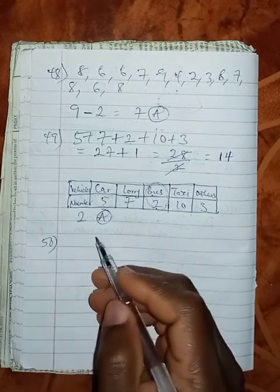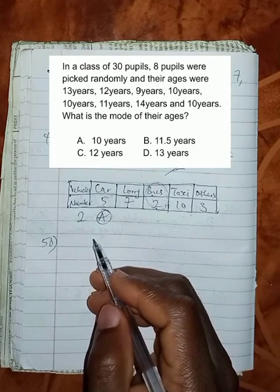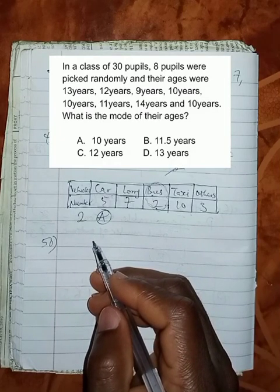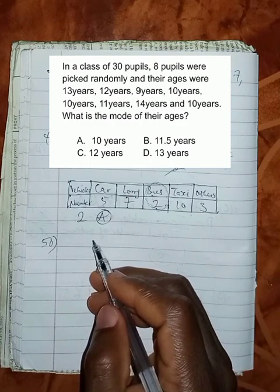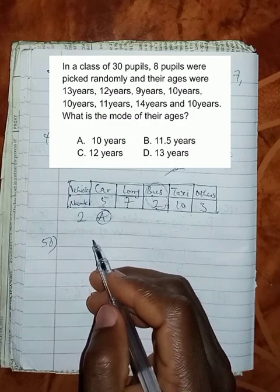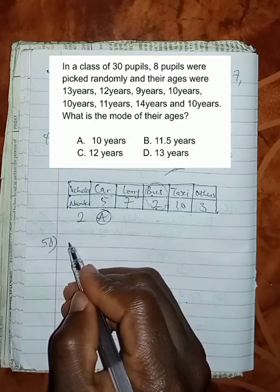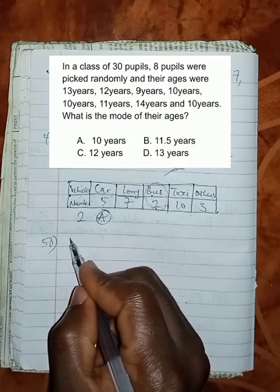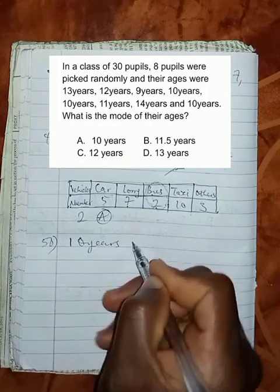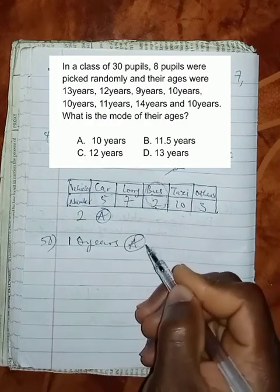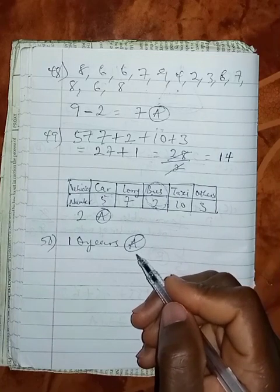Question 50, which is the last question, says, in a class of 30 pupils, 8 pupils were picked randomly and the ages were 13 years, 12 years, 9 years, 10 years, 10 years, 11 years, 14 years and 10 years. What is the number that appears the most? The age that appears the most there is 10. 10 years appears the most, and that is option A. Thanks so much for viewing. I'll see you on the next video.